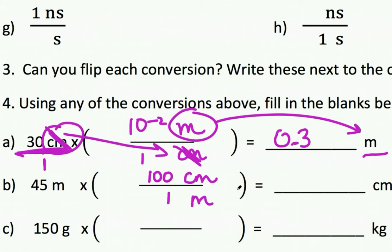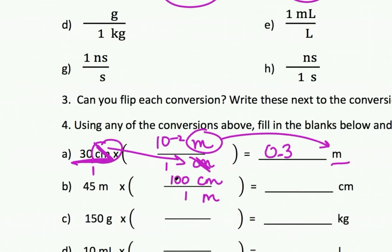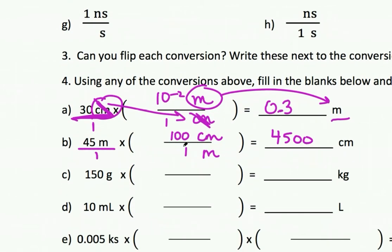Like, I like thinking of it like 100 small units of centimeters equals 1 bigger unit of meters. I like that version of it, but it's up to you. Putting 10 to the minus 2 down here is the same thing, right? So 45 times 100 is 4500. So remember, this is on the top, so you multiply going across, and then if you have any numbers in the bottom you divide by those numbers.